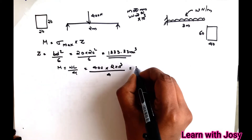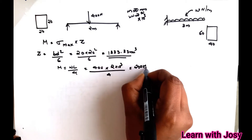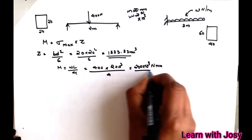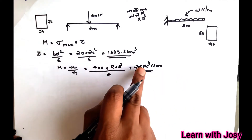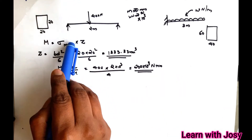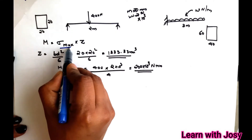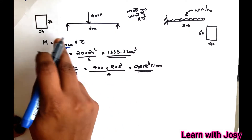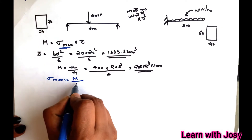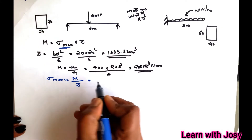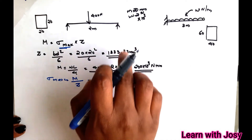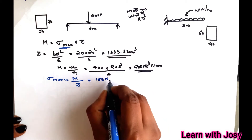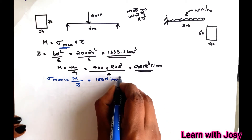The answer is M = 200 × 10³ N·mm. Now we substitute into the bending stress equation: σ_max = M / Z. The answer is σ_max = 150 N/mm².